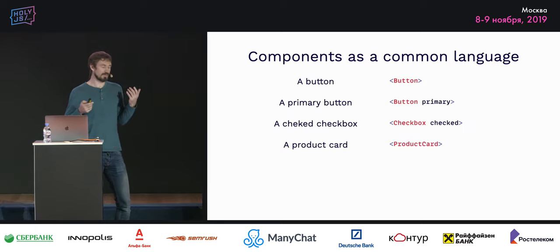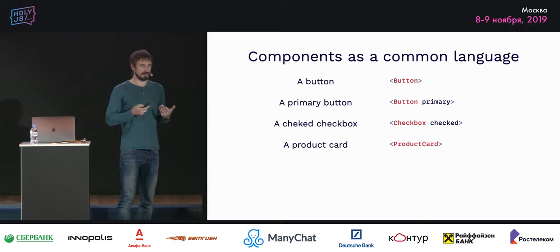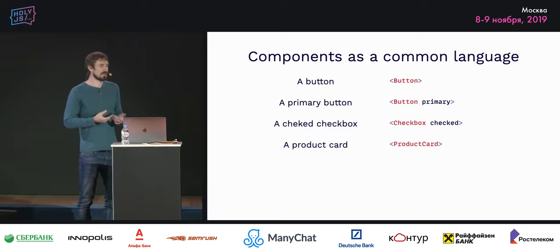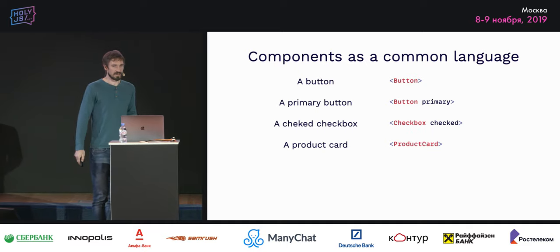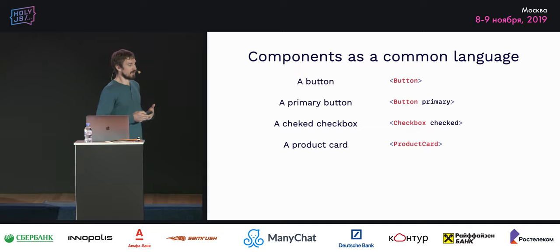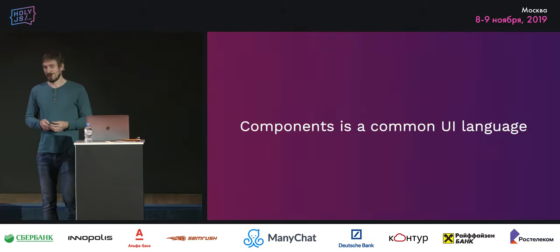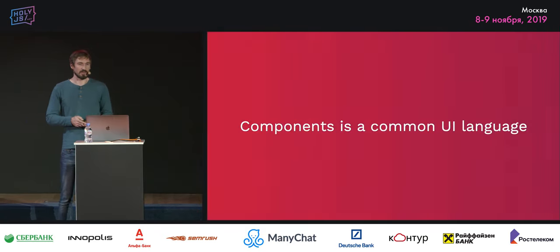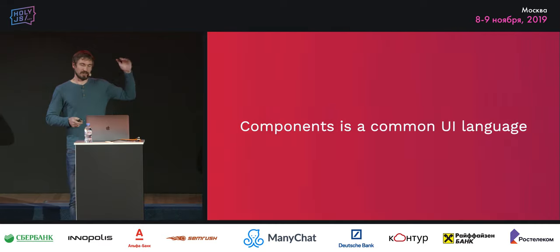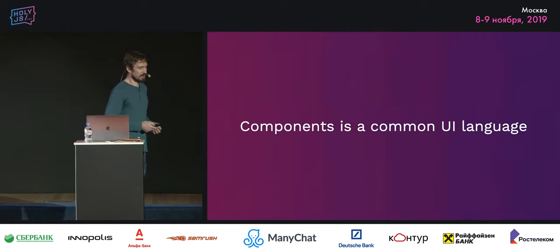For me, probably the most beneficial property of components is that we can use them as a common language between designers, developers, project managers, and users. When you talk to people, you use human language — if someone wants a button, they say 'can you make a primary button or a checkbox?' If you write components like that, you can literally speak the same language in your code. The first takeaway: components are a common UI language for all stakeholders working on a product.